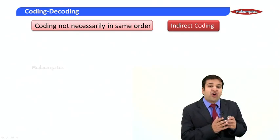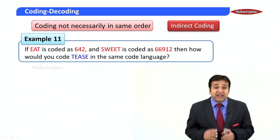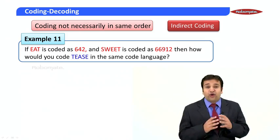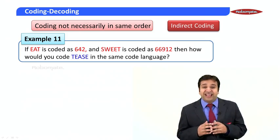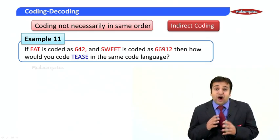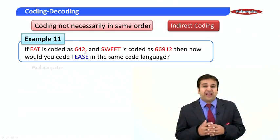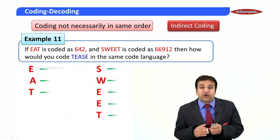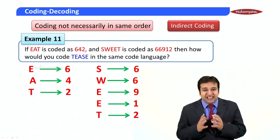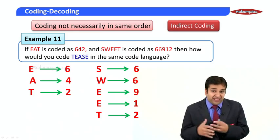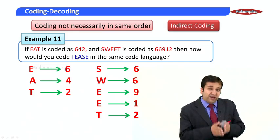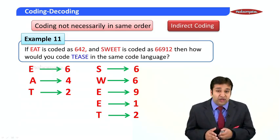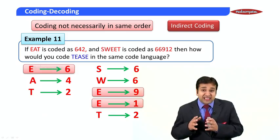Indirect coding clearly means that coding is not necessarily in the same order. Let us understand indirect coding through a simple example. It says that if 'eat' is coded as 6-4-2 and 'sweet' (s-w-e-e-t) is coded as 6-6-9-1-2, then how would you code 'tease' (t-e-a-s-e) in the same code language? We assume e is 6, a is 4, t is 2, and write the numbers in front as given — 6-6-9-1-2 for sweet.